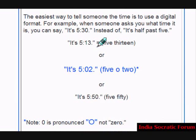The easiest way to tell someone the time is to use a digital format. For example, when someone asks you what time it is, you can say, it is 5:30, instead of it is half past 5. Like it is 5:13, or it is 5:02. Note: 0 is pronounced 'O', not zero. Or we say it is 5:50.